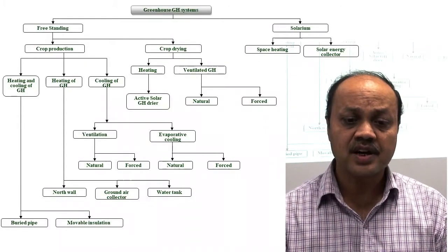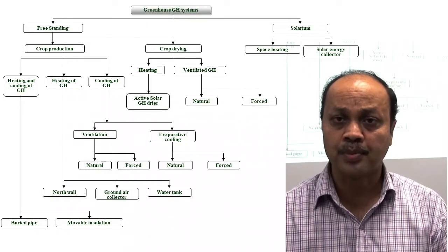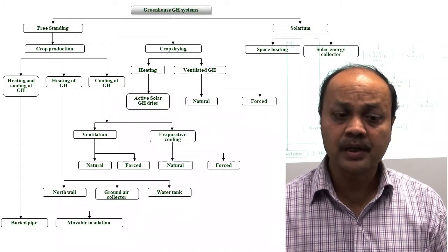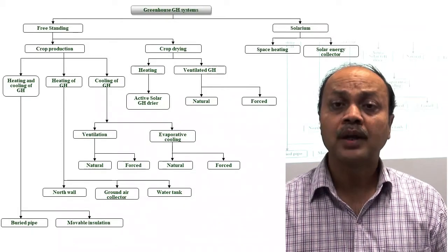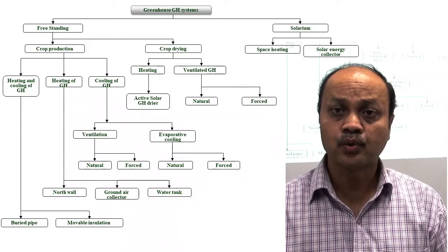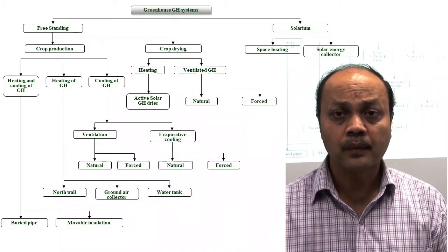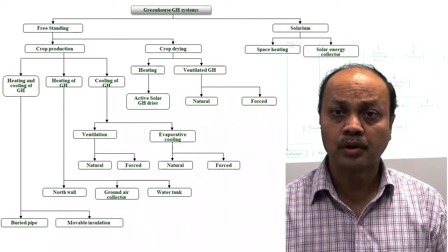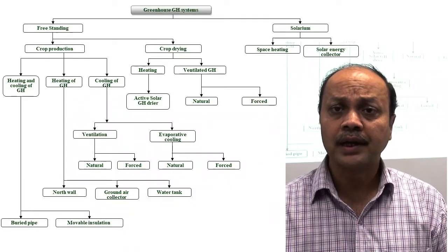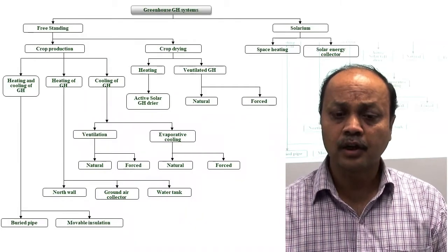In the free-extending category, two main uses exist: crop production and crop drying. The main activity is crop production. For crop drying, all types of greenhouse dryers that use solar energy to heat inside air work on the greenhouse principle. So greenhouse technology can be used for drying purposes as well. In the solarium, we normally use it for heating a house or structure, and also for cultivation.